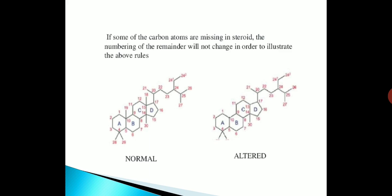If some of the carbon atoms are missing in a steroid, the numbering of the remainder will not change. To illustrate the above rules, the first figure shows the normal numbering and the second shows the altered numbering.